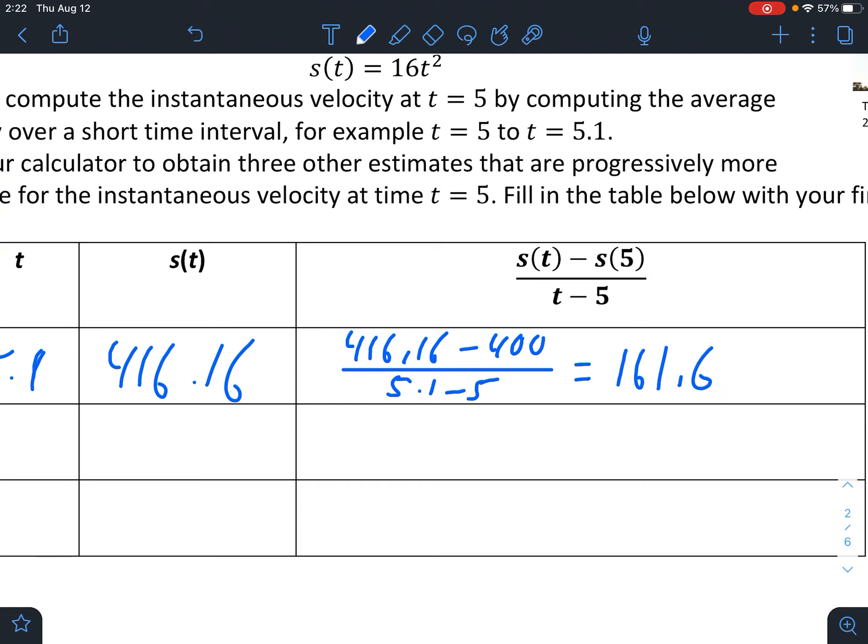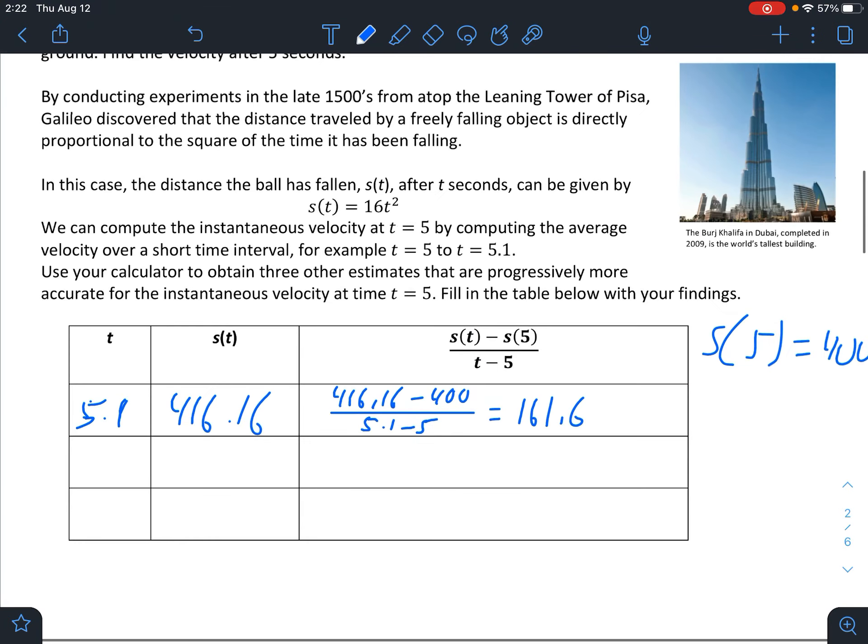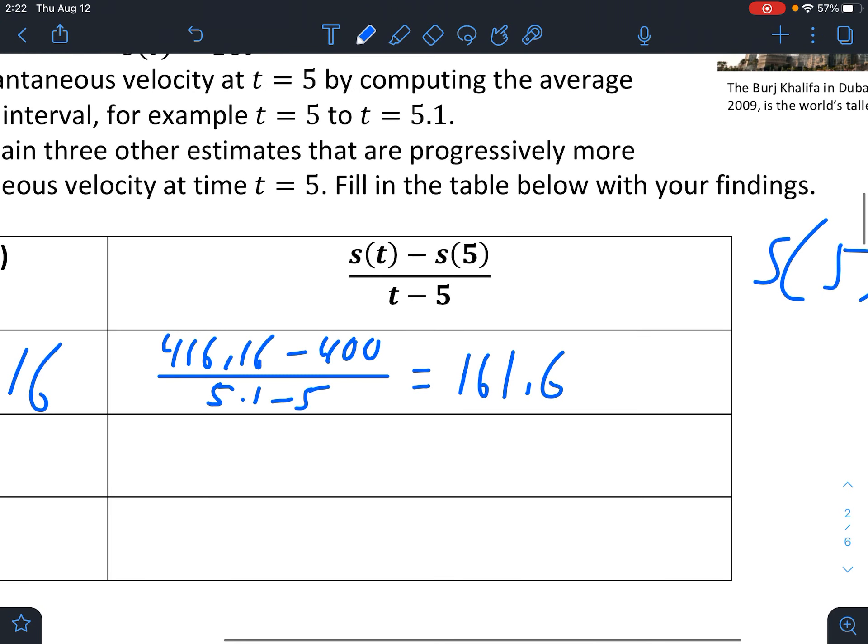We get the average velocity from 5 to 5.1 is 161.6. Let's talk about what the units would be here. That would be feet per second.